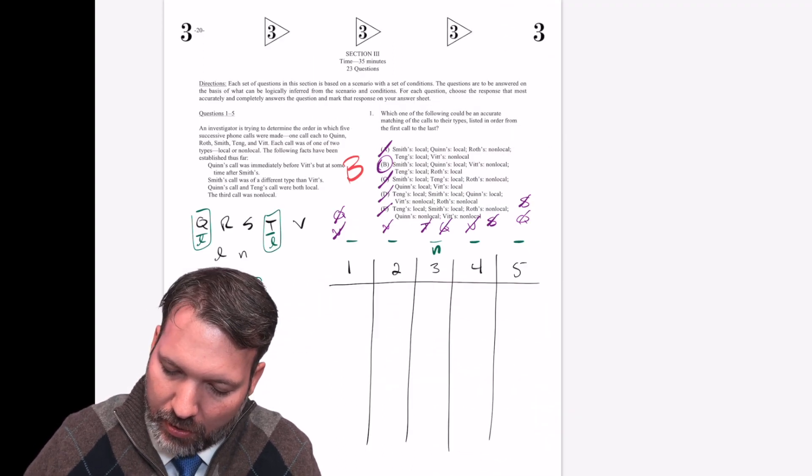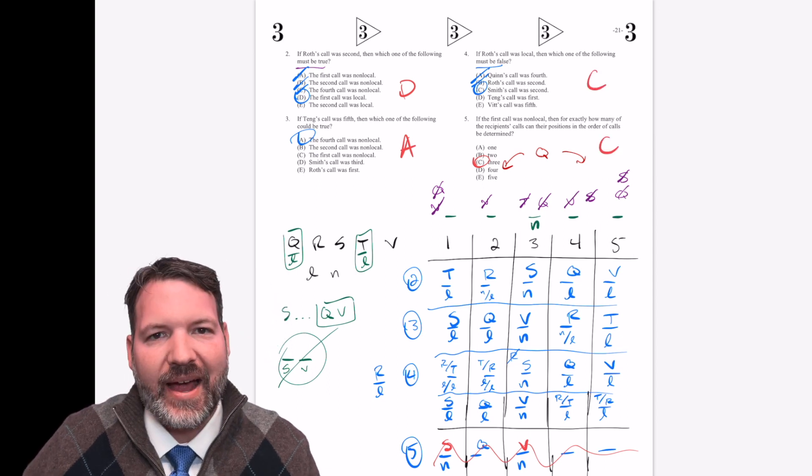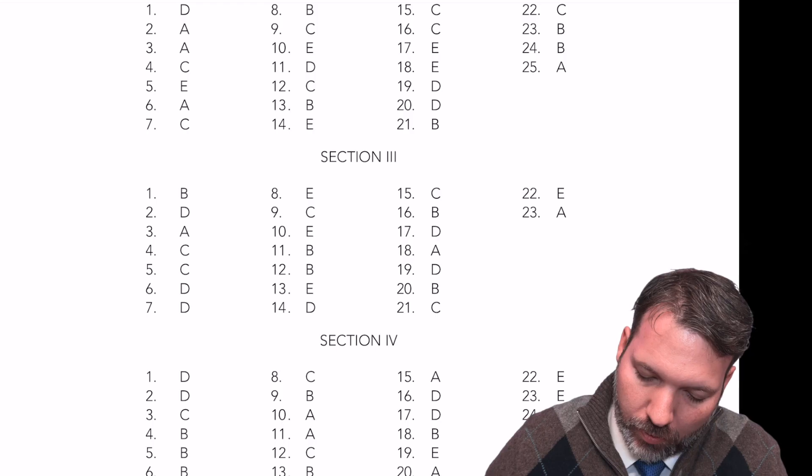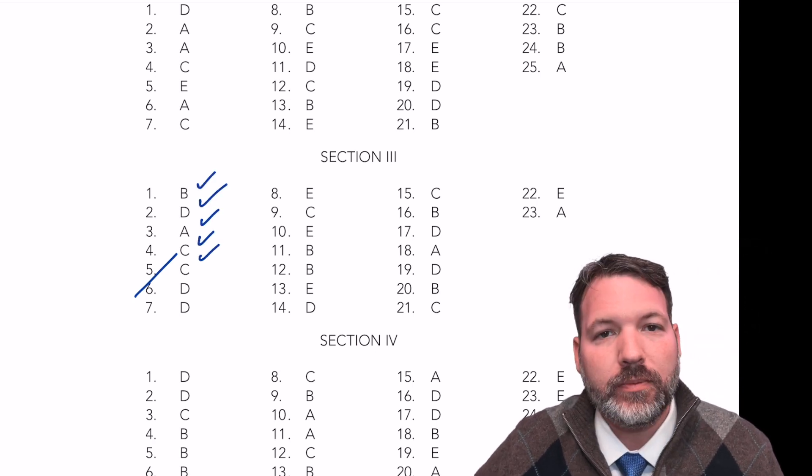All right, what have we got? B, D, A, C, C. BDACC. One through five. BDACC. Well done to us.